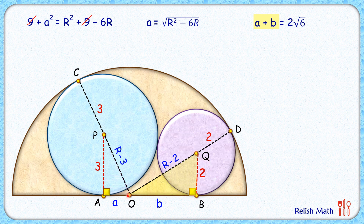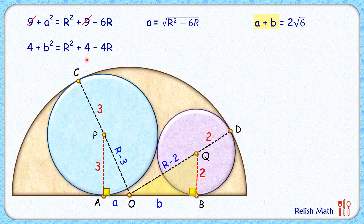In the same way, looking at triangle QBO, applying Pythagoras' theorem: b² + 2² = (r−2)². Since 2² is 4, applying the a minus b whole square identity, the 4 cancels on both sides, and we get the value of b as √(r²−4r). We can now put these individual values of a and b into our original equation to get a new equation in terms of r.